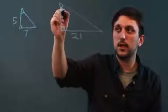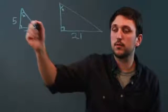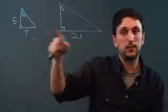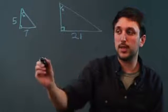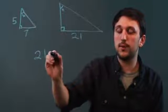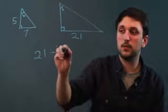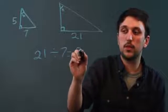So if this angle x equals this angle x, then there is a scale factor. And what we do is we take the big length, 21, and we divide it by the small length, 7, and that equals 3.